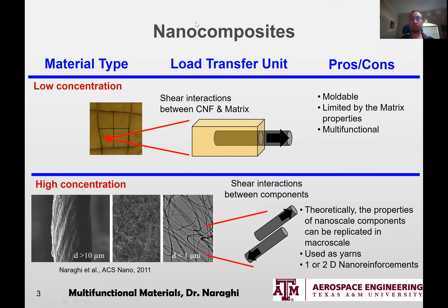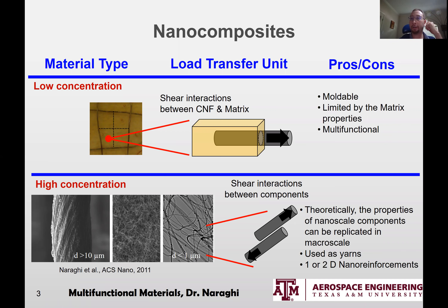So let's continue. The two types of nanocomposites I briefly mentioned: the first one is a polymer matrix that has one, two, or three percent by weight or volume of a nanofiller. The other aspect is high concentration, in which the dominant phase is the filler.